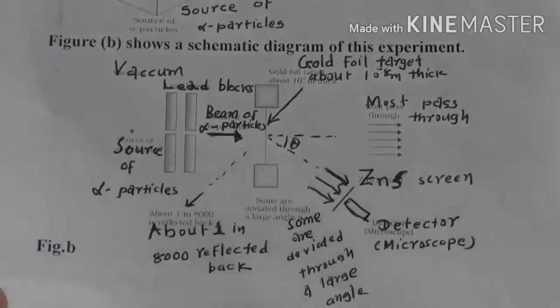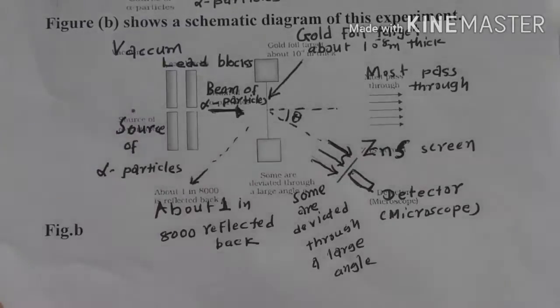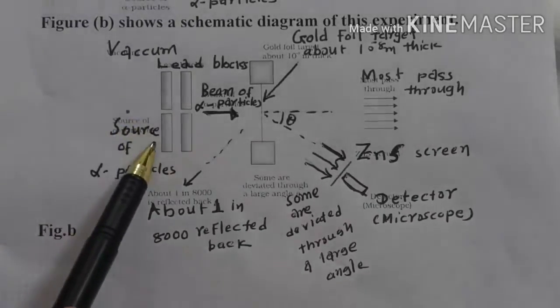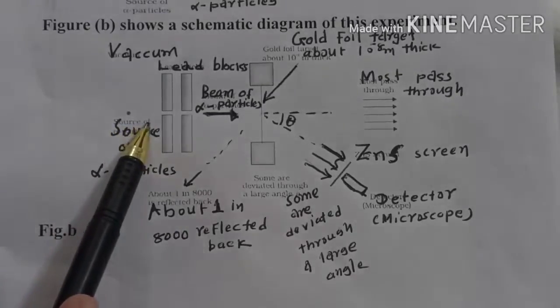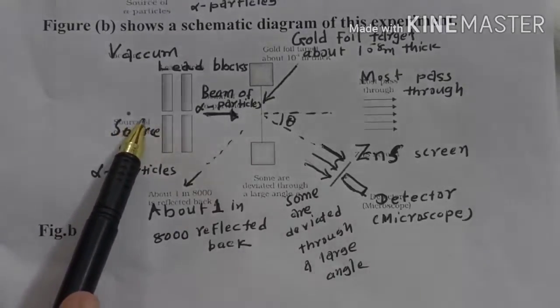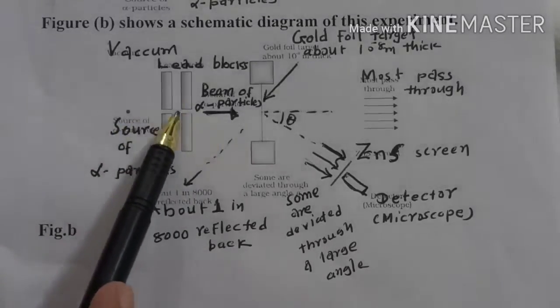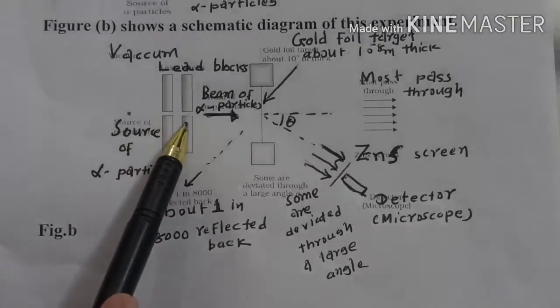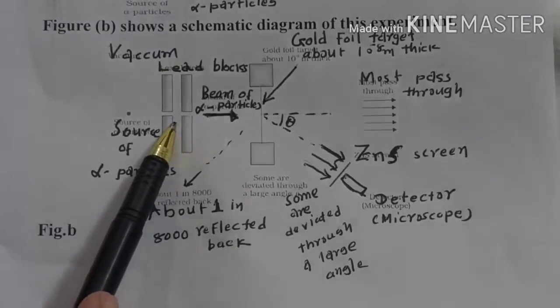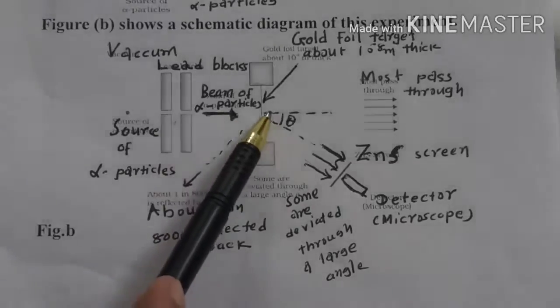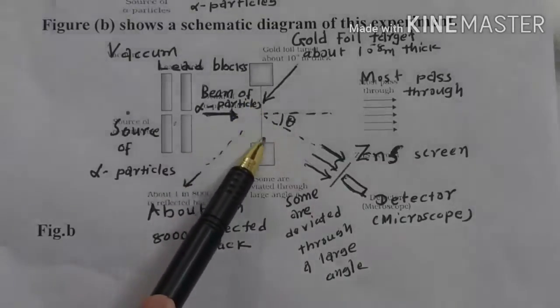So here, this is somewhat a schematic diagram. Source of alpha particle as earlier, it was bismuth, here it is also bismuth. These are the lead blocks to get a very narrow beam because we want alpha particles in the form of a beam. So they hit the gold foil, you can see, scattered at various angles, theta.